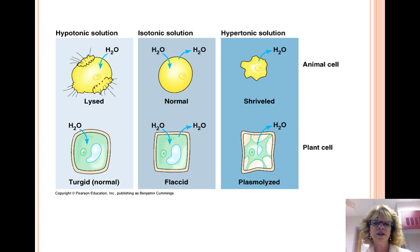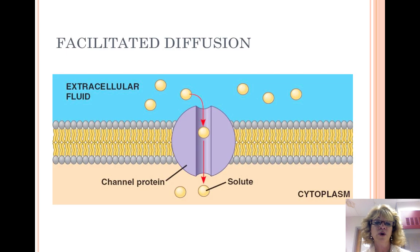Many substances don't diffuse freely across the membrane because of their charge, size, or polarity. Specific transport proteins can help these molecules move across. Facilitated diffusion is the passage of a substance across a biological membrane down its concentration gradient, aided by specific transport proteins. This is still a type of passive transport because it doesn't use energy. Substances that use facilitated diffusion include sugars, amino acids, water because of its polarity, and charged ions.